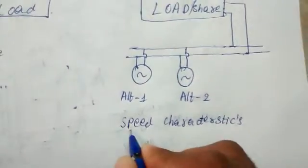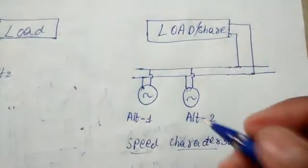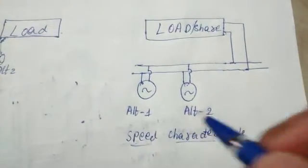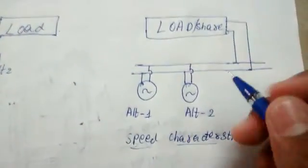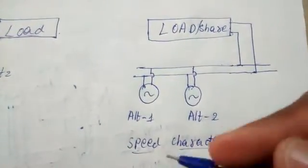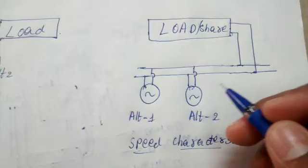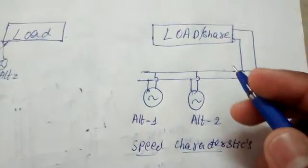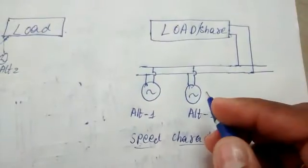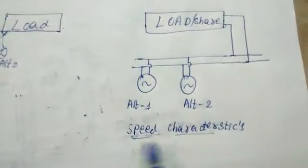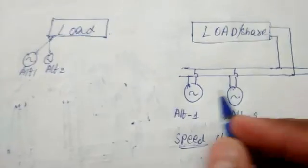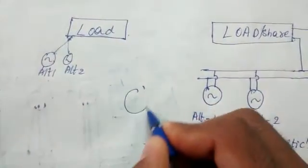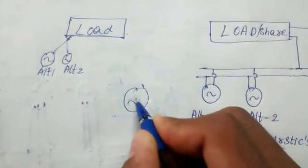Load sharing is not only about alternator voltage — it basically depends on speed characteristics. What speed characteristics? The alternator's speed characteristics. In this case, we generate the EMF, and the voltage produced has a frequency. The EMF is produced by the alternator.